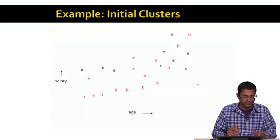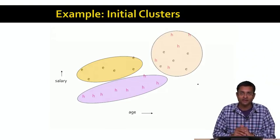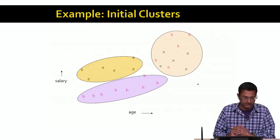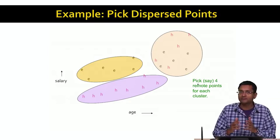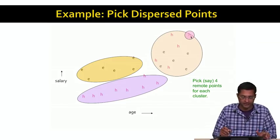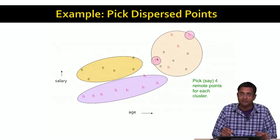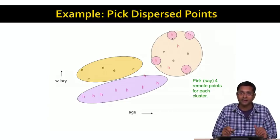Let's look at an example using the faculty salary data. When you run hierarchical clustering on a sample of the data, let's say the first cluster is found here, the second cluster here, and the third cluster here — ending up with three clusters found by the hierarchical clustering algorithm. Now, taking the cluster on the right, we want to find four representative points. The first representative point is picked, then we pick the second to be in this cluster but as far away from the first as possible. The third representative point is still in the cluster but as far away from these two points as possible, and the fourth similarly.